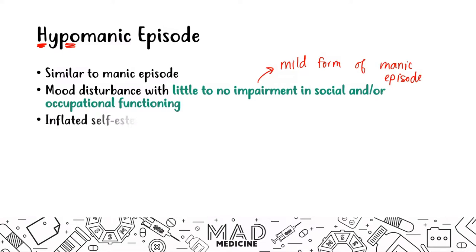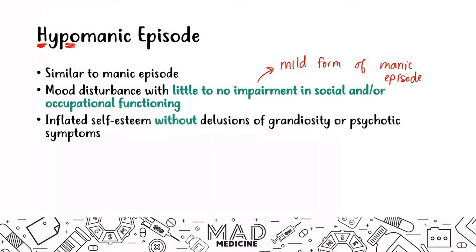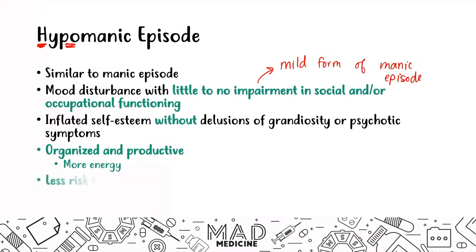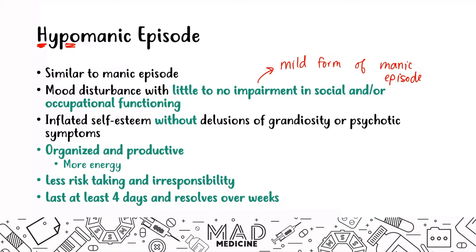Patients with hypomania will have inflated self-esteem, but they won't have grandiosity or psychotic symptoms. Unlike manic patients, hypomanic patients are very organized and more productive because they have more energy. They don't take as many risks and are not as irresponsible — they usually understand what they're doing and the consequences of their actions. Hypomanic episodes usually last around four days and resolve over weeks. Think of hypomania as exactly what the word means: a milder form of mania.